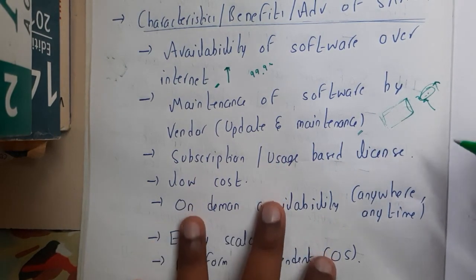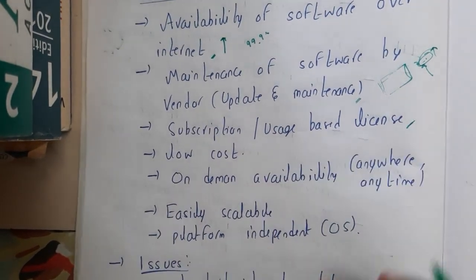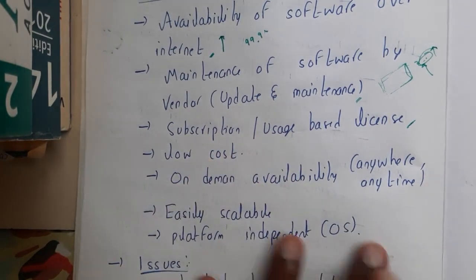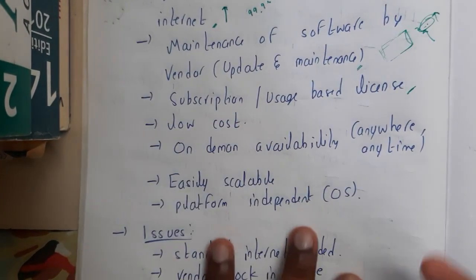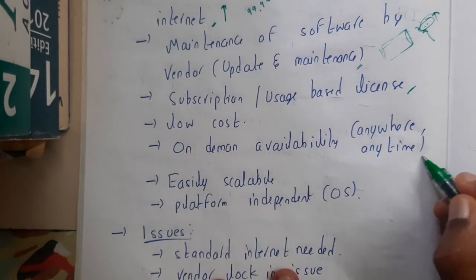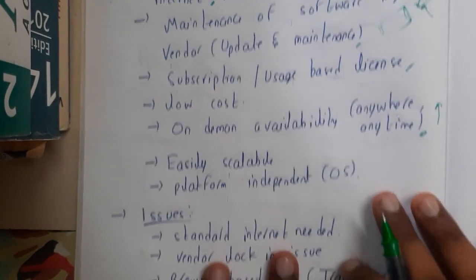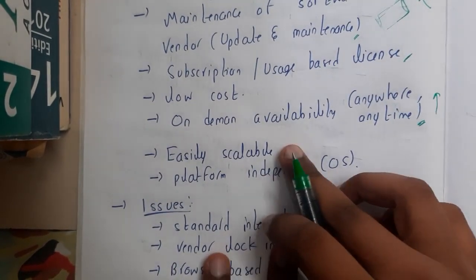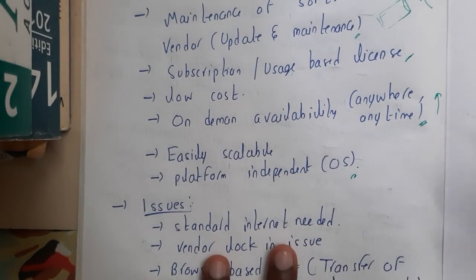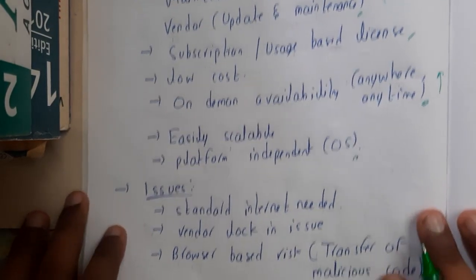Similarly, subscription, usage, and licensing are really easy. The cost will be low, and software is available on demand. If you want to upgrade something, you can do it easily. SaaS is easily scalable and is platform and operating system independent — you can run it from any operating system.